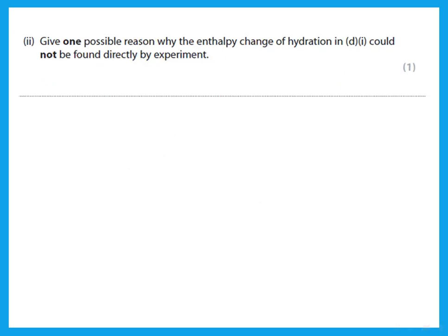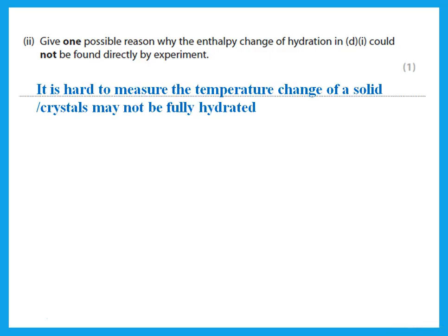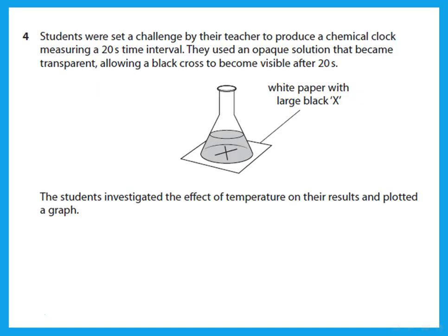Give one possible reason why the entropy change of hydration could not be found directly by experiment. Why can't we calculate it directly through an experiment where we measure differences in temperature? Because in this kind of experiment, it is hard to measure the temperature change of a solid. We're starting with a solid, or you could say that crystals may not be fully hydrated, so it's difficult to know when I have added enough water so that all of it has become hydrated.